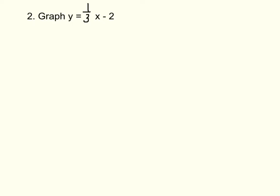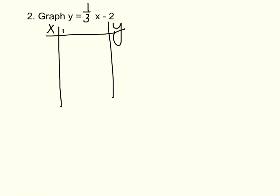Example number 2: graph y equals one-third x minus 2. Let's make our table of values. X is what you plug in, y is what comes out, and in the middle is where we show our work. Now, we have a fraction — but fractions are easy. We're taking one-third of a number. If you use 1, you get a fraction; if you use 2, you also get a fraction.